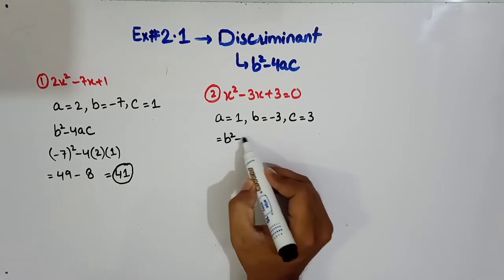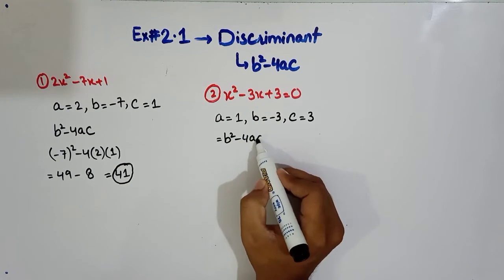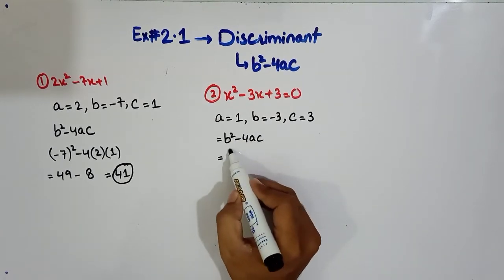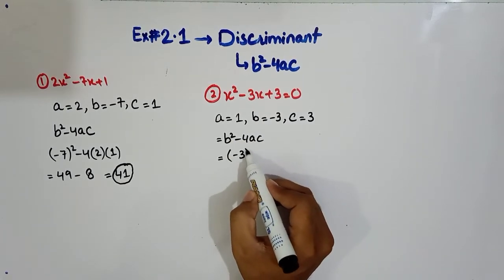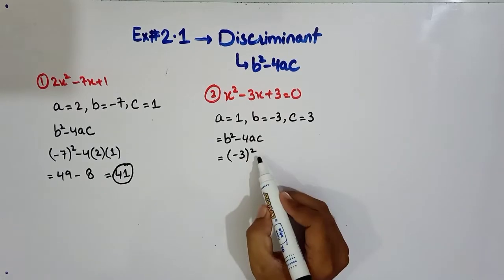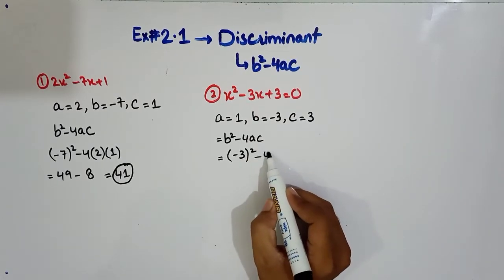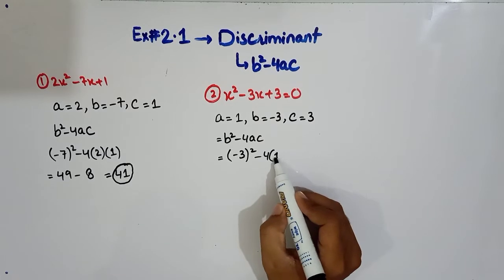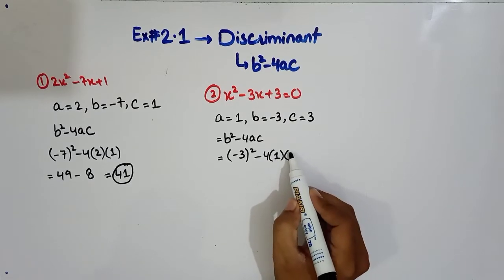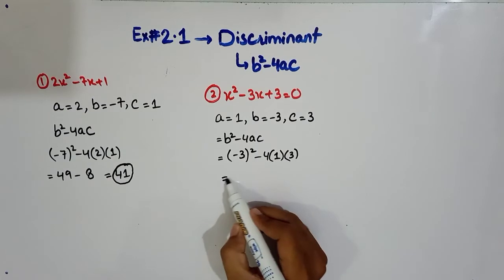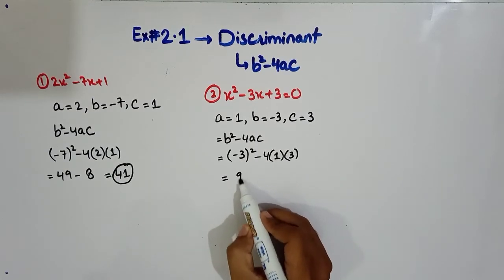Similarly you have to write discriminant which is equal to b squared minus 4ac. Now you have to put values in this place. B value minus 4, A value is equal to 1, C value is equal to 3. Now simply we have to solve it. 3 squared is equal to 9.